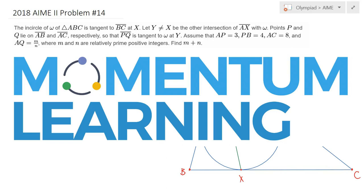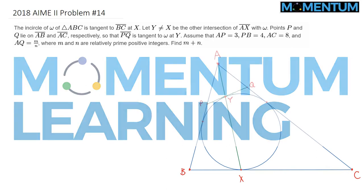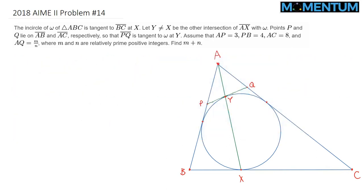This is 2018 AMC/AIME problem number 14. The incircle omega of triangle ABC is given, and we are told that it is tangent to side BC at the point X.